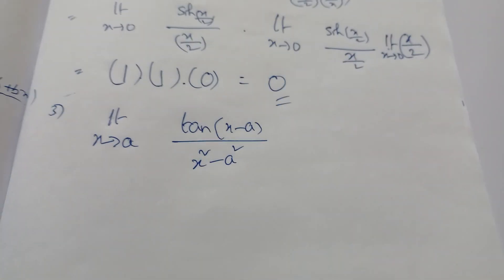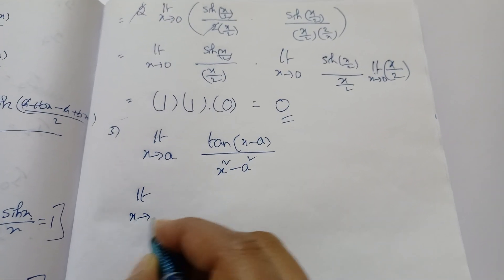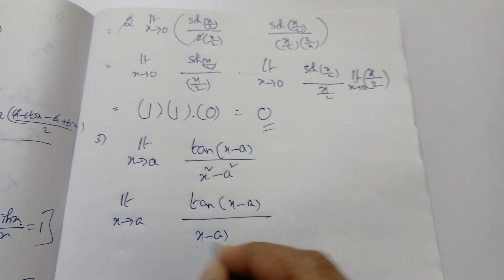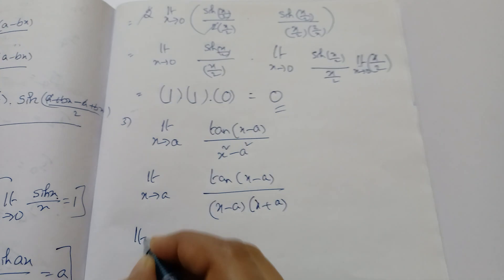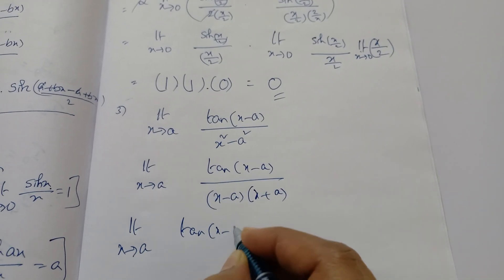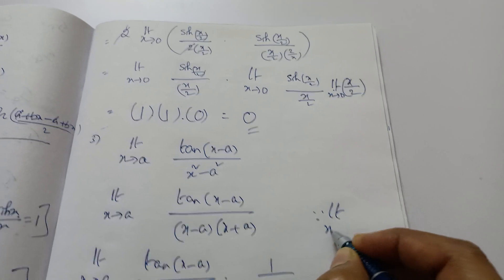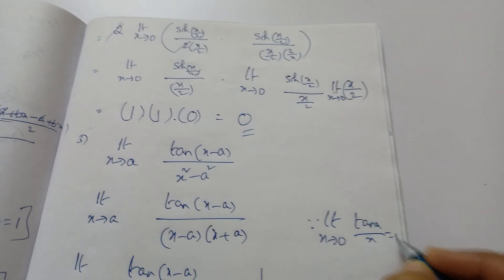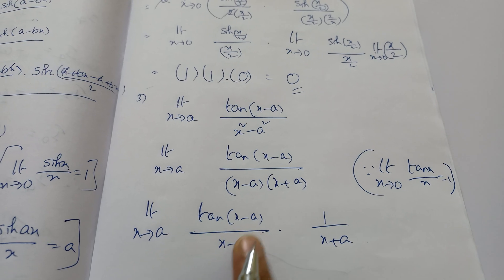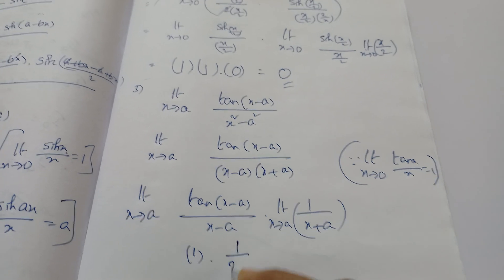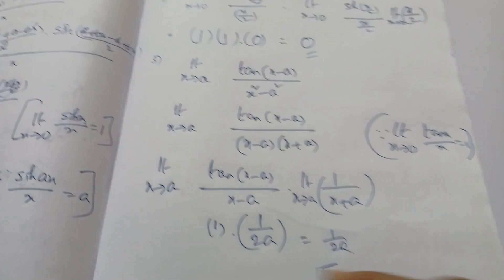Next: limit x tends to a of tan(x − a) / (x² − a²). Note that x² − a² = (x − a)(x + a). So: limit x tends to a of tan(x − a) / [(x − a)(x + a)] = [tan(x − a)/(x − a)] · [1/(x + a)]. Now use the formula: lim(x→a) tan(x − a)/(x − a) = 1. Then substitute x = a in 1/(x + a): 1/(a + a) = 1/(2a). So the answer is 1/(2a).